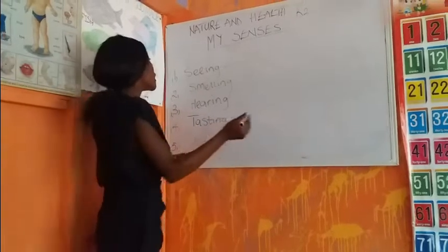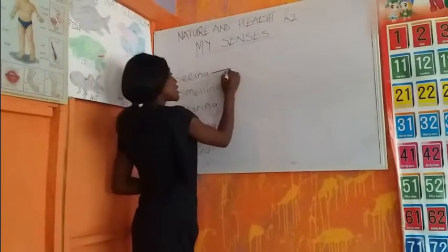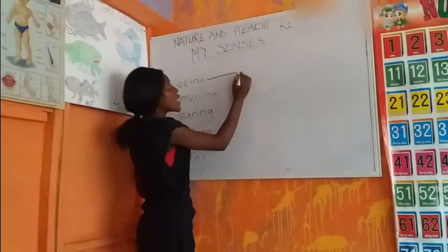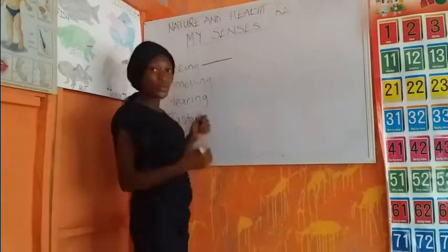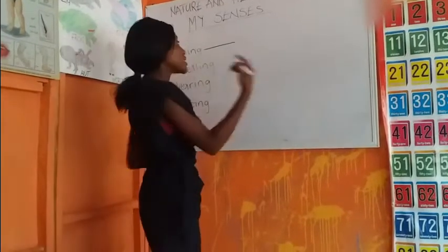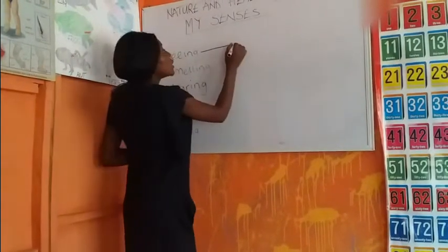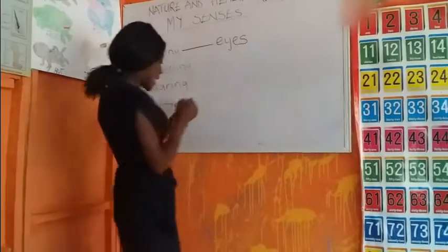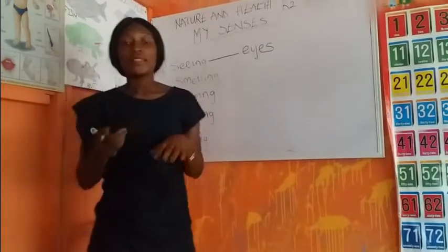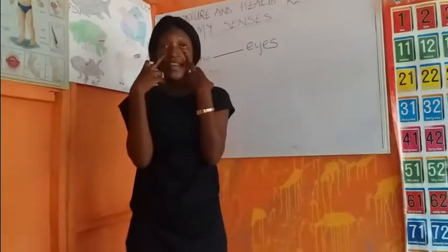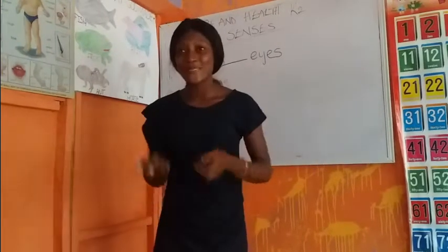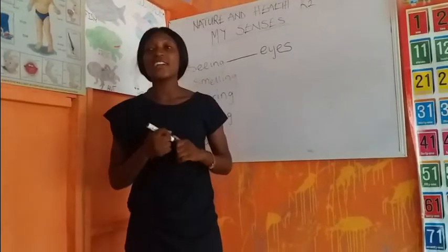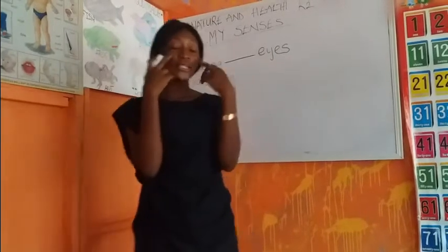The first sense is the sense of seeing, and the organ for seeing — the part of the body I use for seeing — is my eyes. I have two eyes, and so does every human being. We have two eyes, and the eyes are used for seeing.